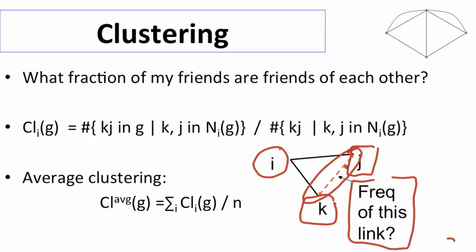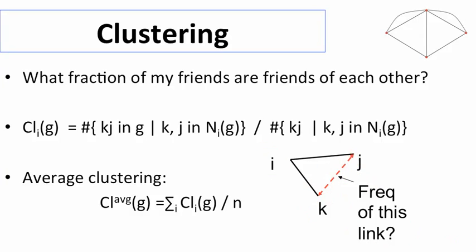So if we want to look at a given node i and ask what the clustering is for that node i in a given network, then we can say, okay, let's look at i's neighborhood and look at all the pairs of friends that i has, two different k's and j's in that neighborhood, and keep track of